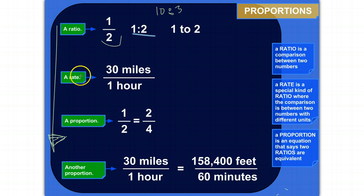So a rate is a special kind of ratio where the comparison is between two numbers with different units. Here's an example: I'm comparing 30 miles to one hour. The numbers are 30 to 1, but the units are miles and hours. A counterexample would be if I'm comparing